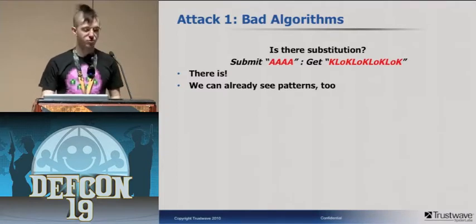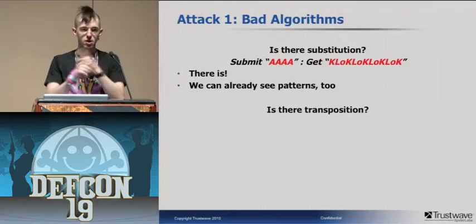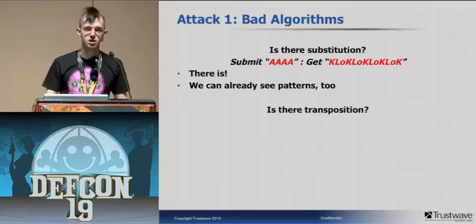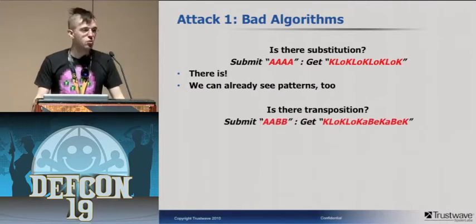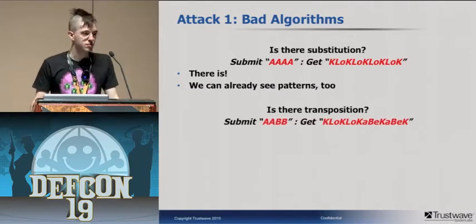Next thing we look for is transposition — if characters are being switched around before or after substitution occurs. We'll submit AABB and see something similar to what we saw before.